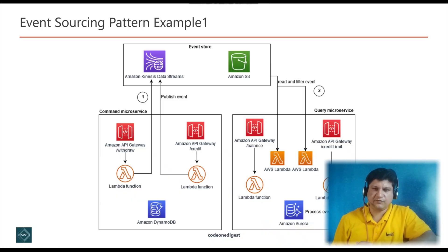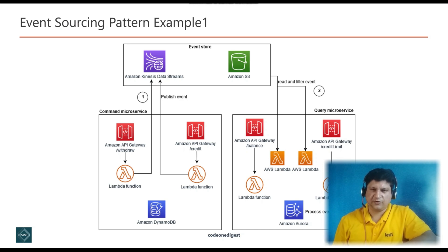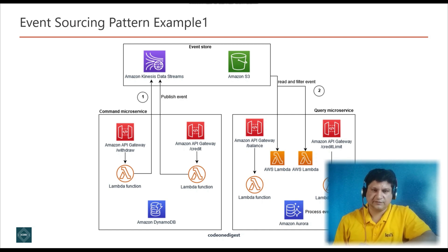Now let's understand the event sourcing design pattern with a real world example. In this example, Kinesis Data Stream is the main component of a centralized event store. The event store captures application changes as events and persists them on Amazon Simple Storage Service, that is S3. Whenever the withdraw or credit microservice experiences a state change event, it publishes an event by writing a message into a Kinesis Data Stream. Other microservices such as balance or credit limit read a copy of the message, filter it for relevance, and forward it for further processing.